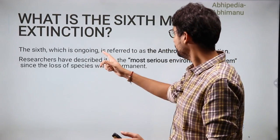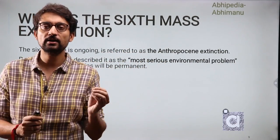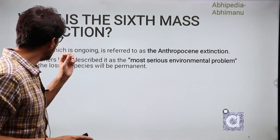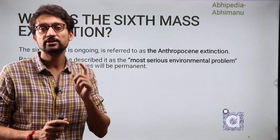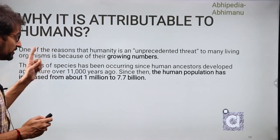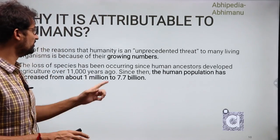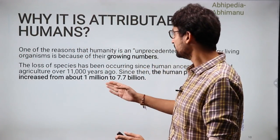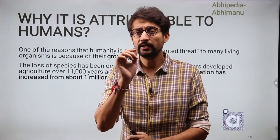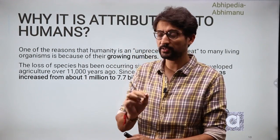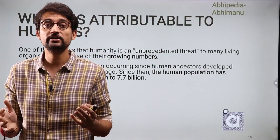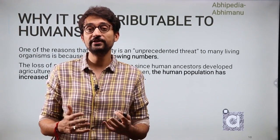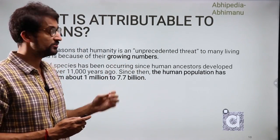The sixth mass extinction, as I mentioned, is called the Anthropocene extinction. The word Anthropocene means human-led — this extinction is being witnessed in the era of humans. The main factor is that serious environmental problems caused by us are driving this mass extinction. Humanity has made unprecedented changes because our numbers keep growing. In the last 11,000 years — a very short geological time — our population has grown from 1 million (10 lakh) to 7.7 billion. Because of this massive population, we have exploited natural resources to a great extent, due to which other species are unable to survive. That is the possible reason for the ongoing sixth mass extinction.